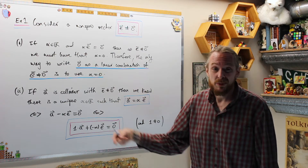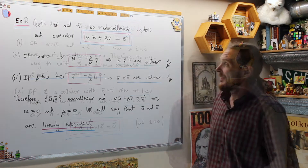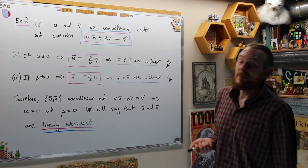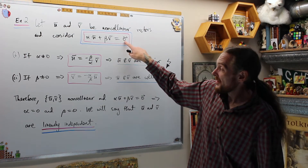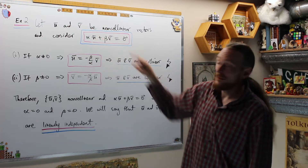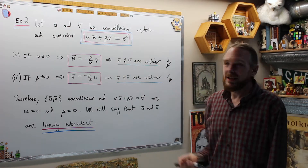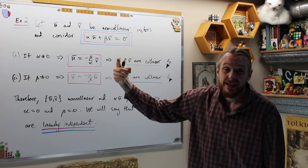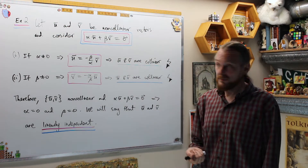That's going to be our general definition of linear independence. Let's do one more example and then give the general definition. Example 2 continued: let u and v be non-collinear vectors this time, and consider zero as a linear combination of u and v. We're going to argue that immediately, if we have non-collinear vectors, then α and β must both be zero.